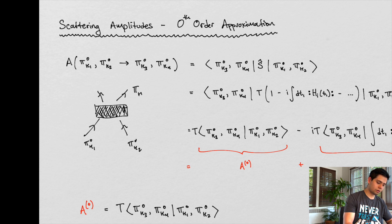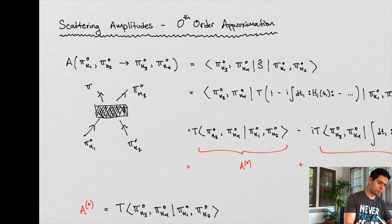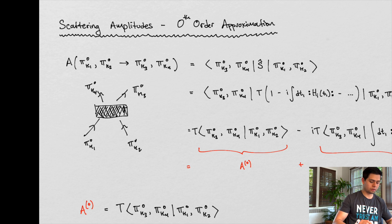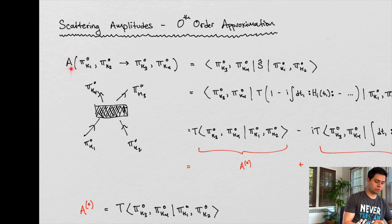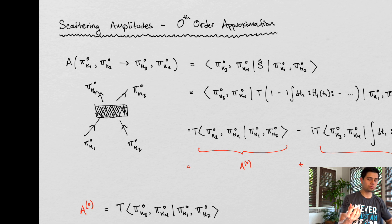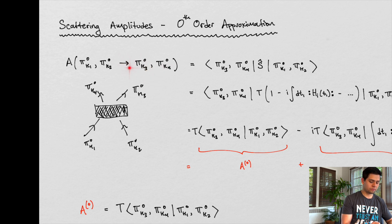We don't know exactly how the particles interact, but we can measure the outcome. So we have a pion coming out with momentum k3 and a pion coming out with momentum k4. What happens in this black box we can approximate, and we're going to see how we do that. We want to get an amplitude — like a number — that we can associate with this transition.